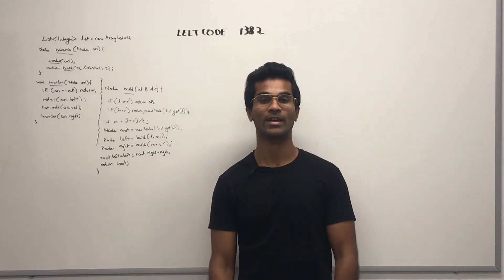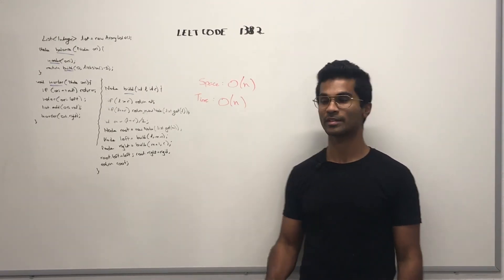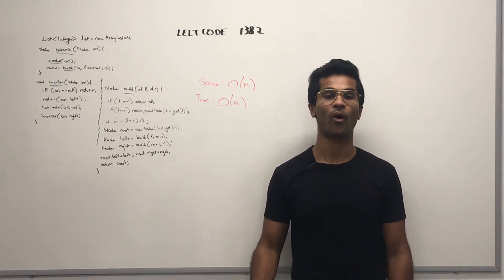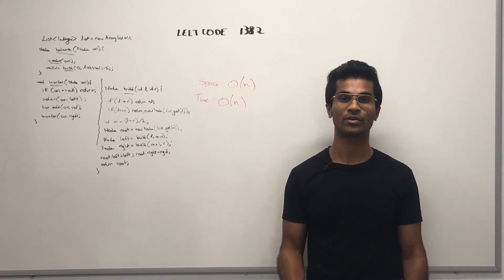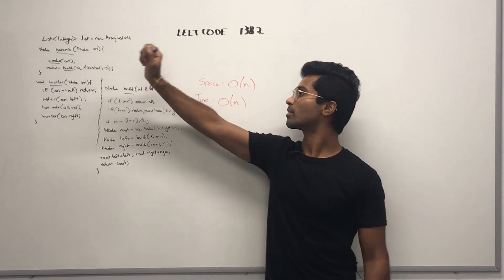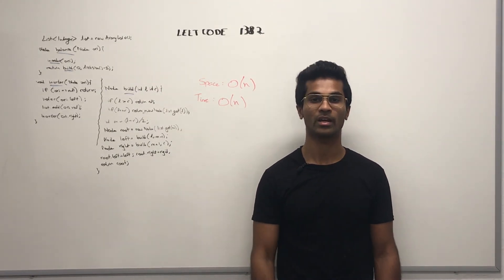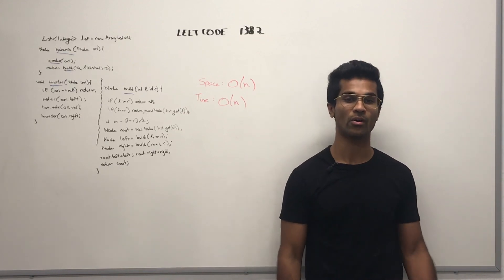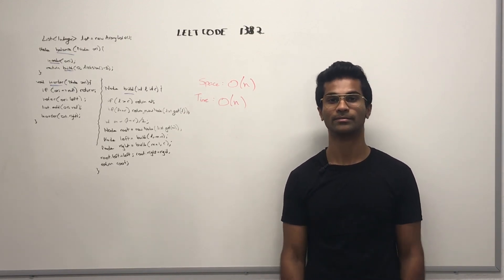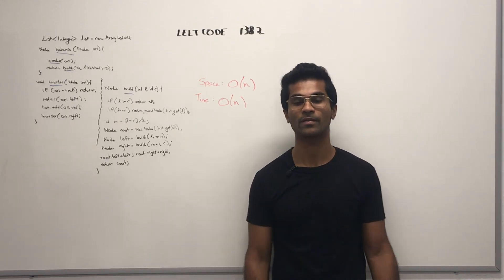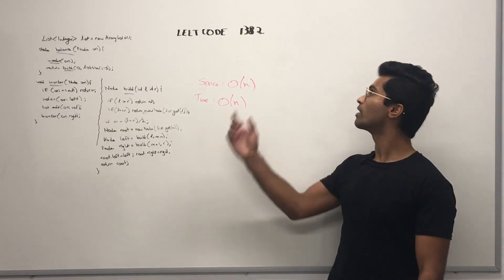Now let's look at the space and time complexities. The space complexity is big O(n) because we have to store all the integers of the input tree. The time complexity is also going to be big O(n) because we have to visit every single node in our input tree. That's pretty much it as far as the space and time complexity is concerned. So that's how you solve LeetCode 1382.